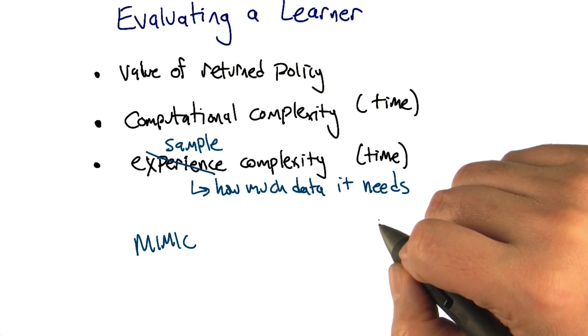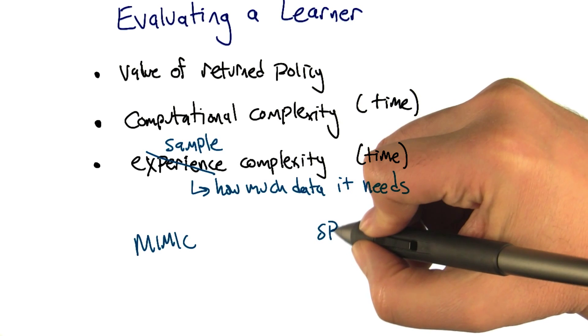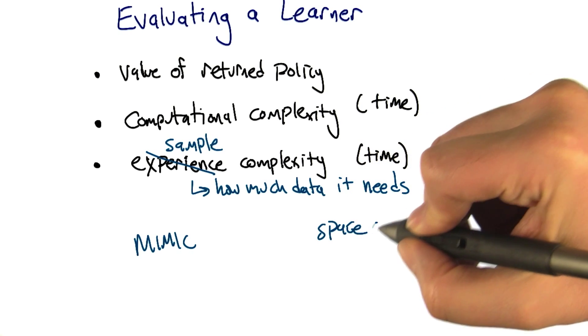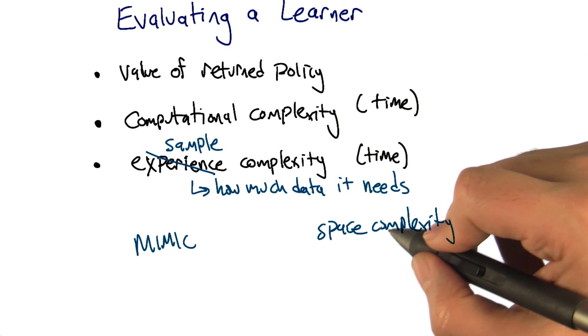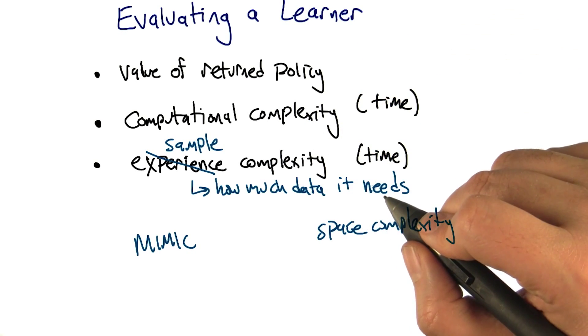Sure. So, why aren't we talking about space? Ooh. So, space complexity. So, that's a good question. In computer science, usually computation time and computation space are the two dimensions along which we evaluate algorithms.